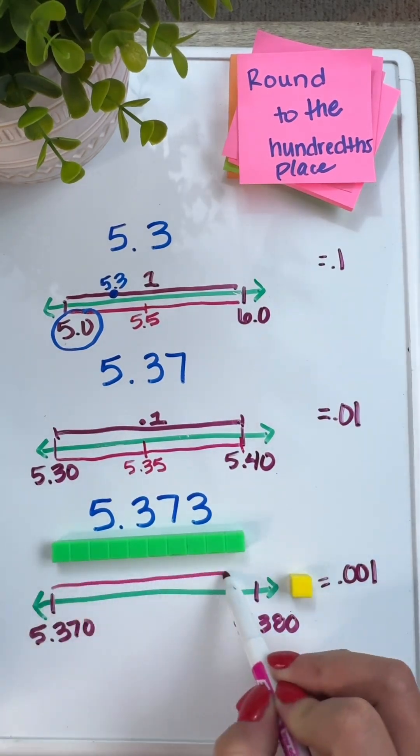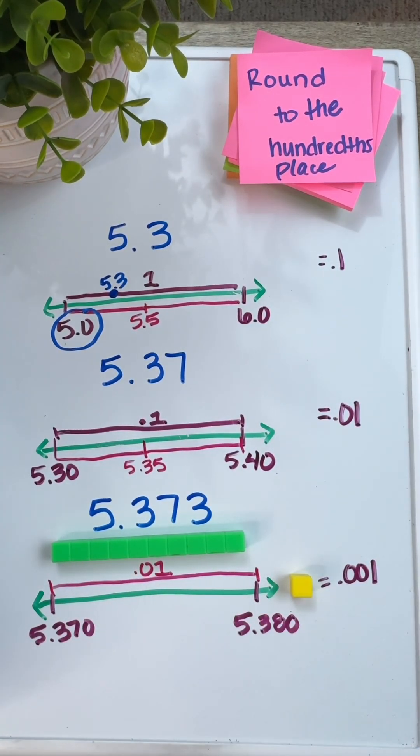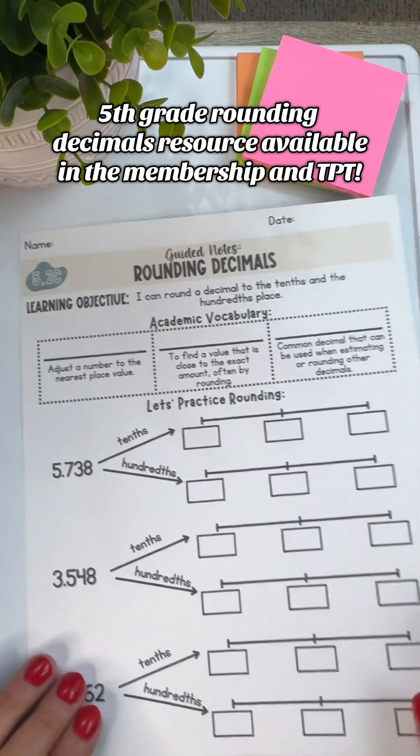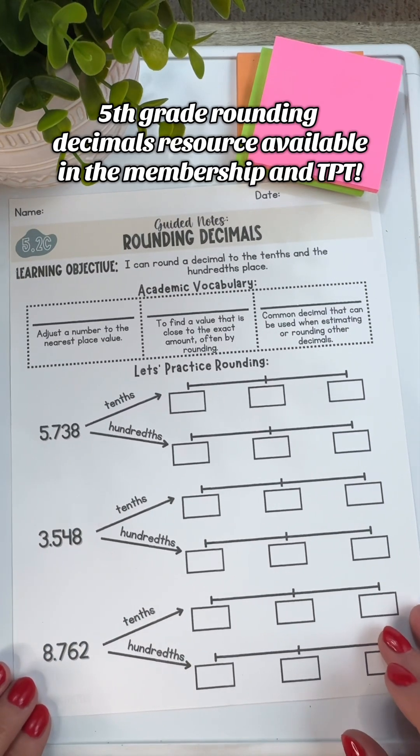Also, the ultimate goal here is for students to not have to draw a number line every time. We want them to visualize that number line in their head so that way they can just fluently round. But you can provide those scaffolds to build up to that number line number sense.